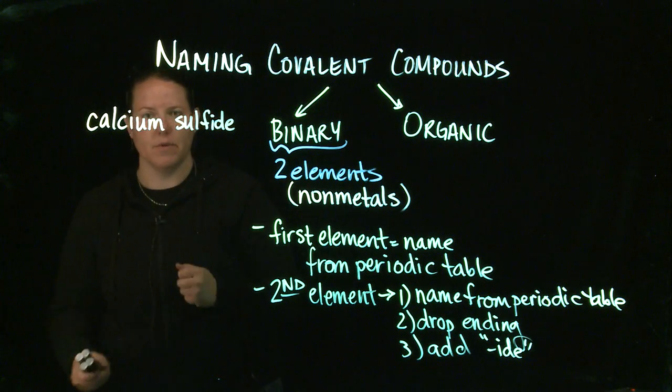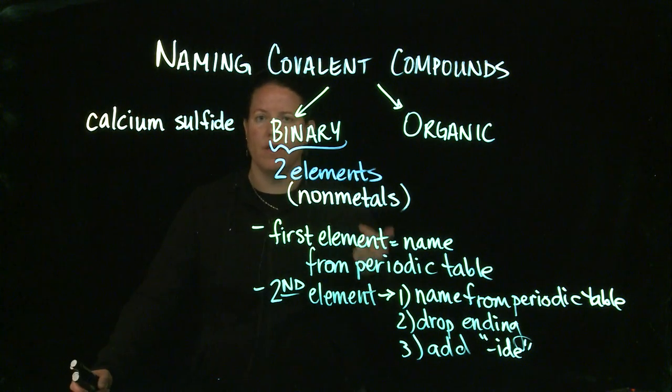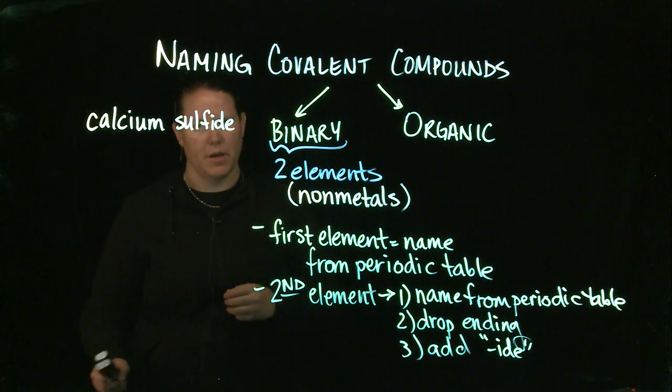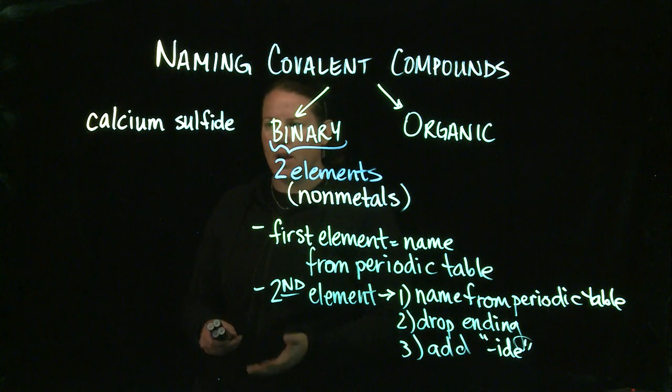If I have the name calcium sulfide and I want to go to the formula, first I would have to ask is this ionic, covalent, or an acid? It is ionic. The reason why I know it is ionic is because it has calcium, which is a metal in front.